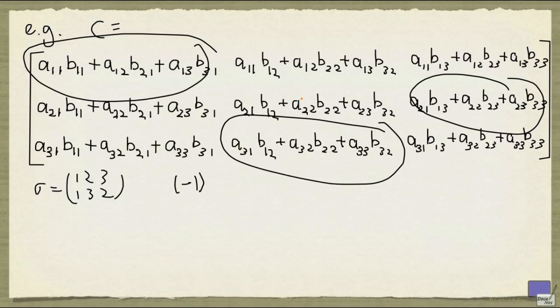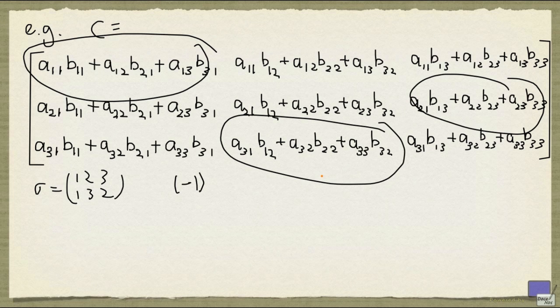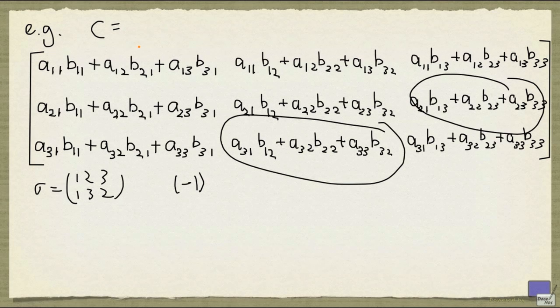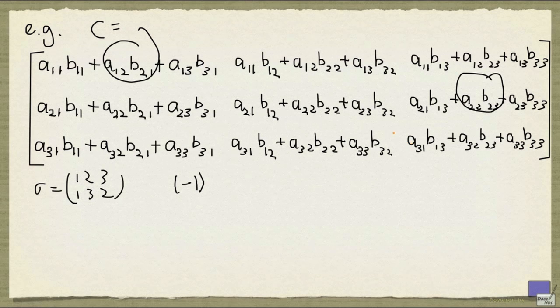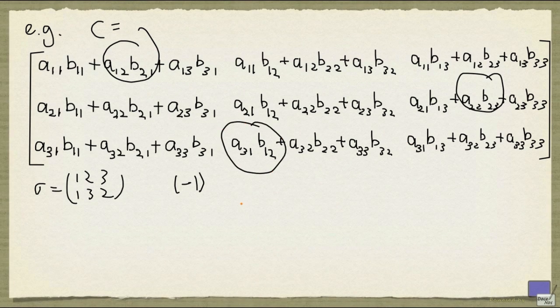Now from the product of these three terms, you get 27 terms, 3 times 3 times 3. So I'm going to pick one of these 27, and I'm going to pick this times this times this. Alright, so the term that I'm looking at is going to be this.